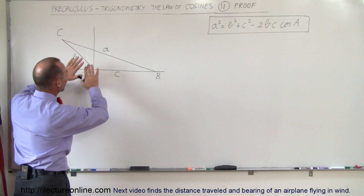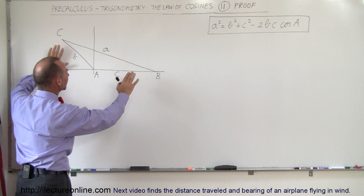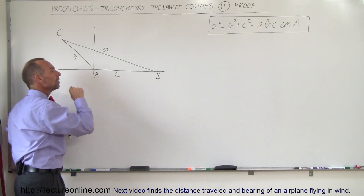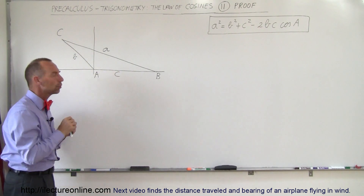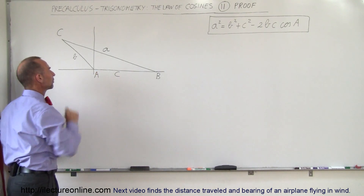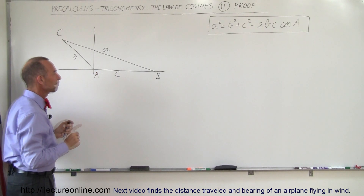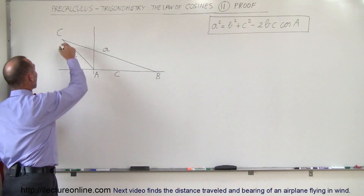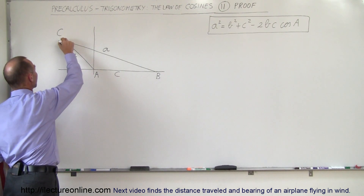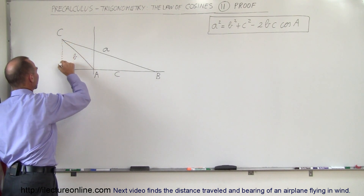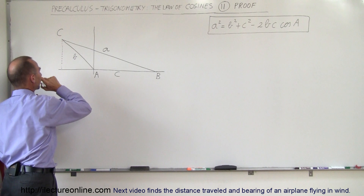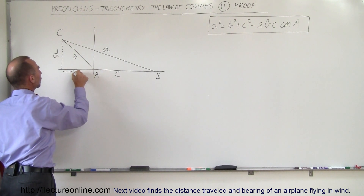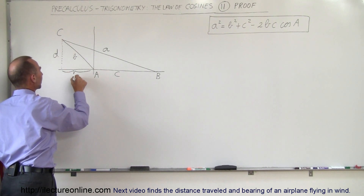We take this triangle and, to make things a little bit easier to work with, we're going to put one of the vertices — one of the angles of the triangle — right here at the origin. Then we're going to turn this into a right triangle by drawing a line from this corner straight down. Let's call this side B, and then let's call this distance right here E.